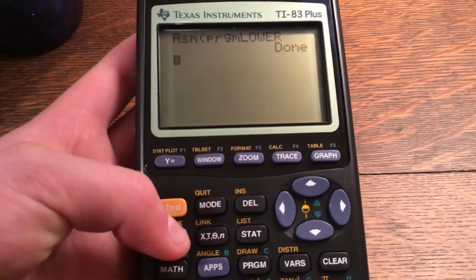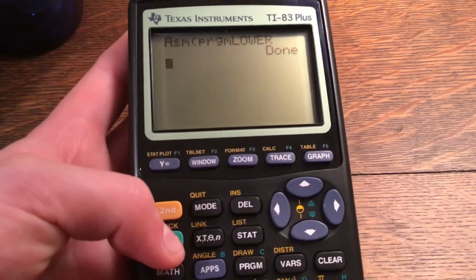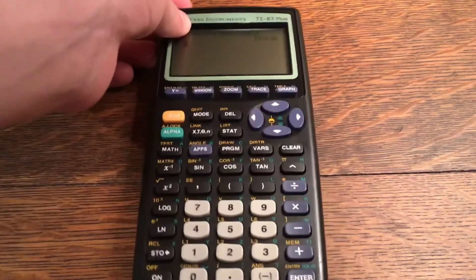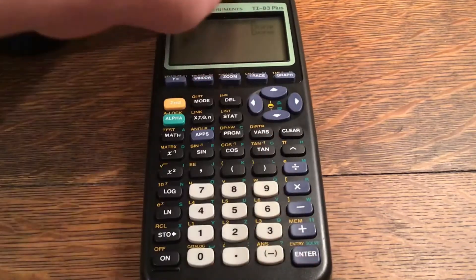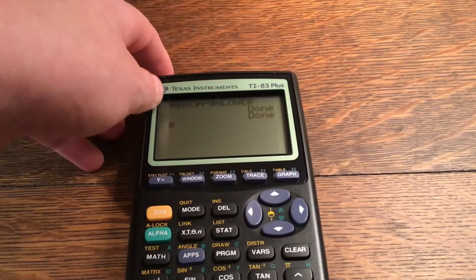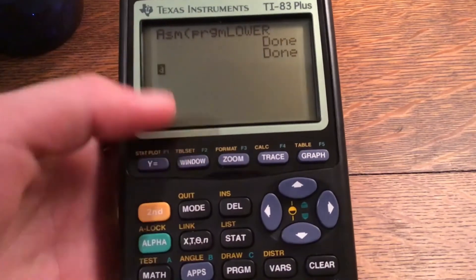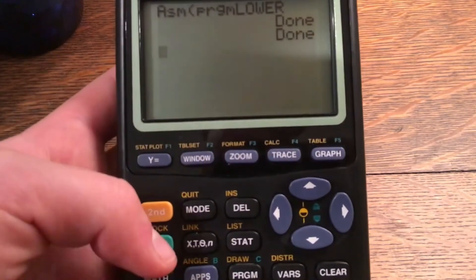Now I'm going to do the cheater's way, I guess. I'll just click enter again because it will run whatever was run last. Now you can see there is a lowercase a when I click alpha once, twice—here's the lowercase a.